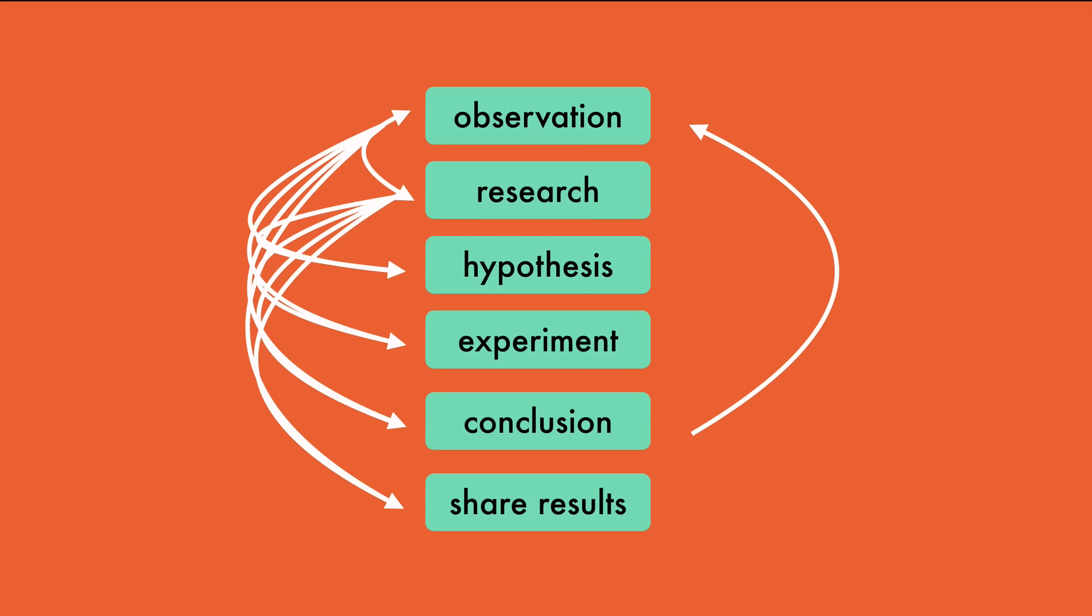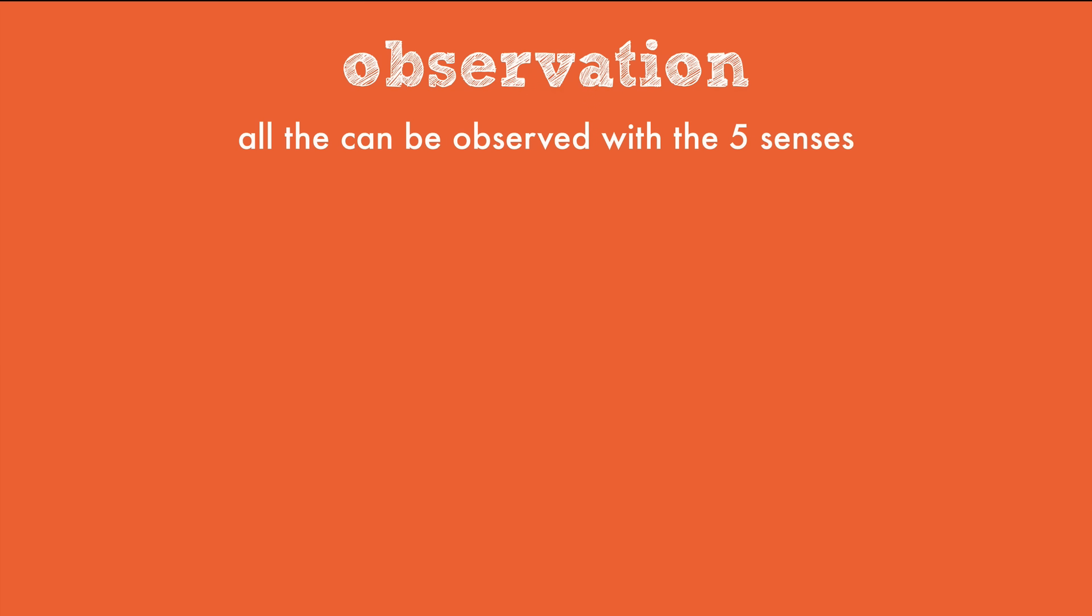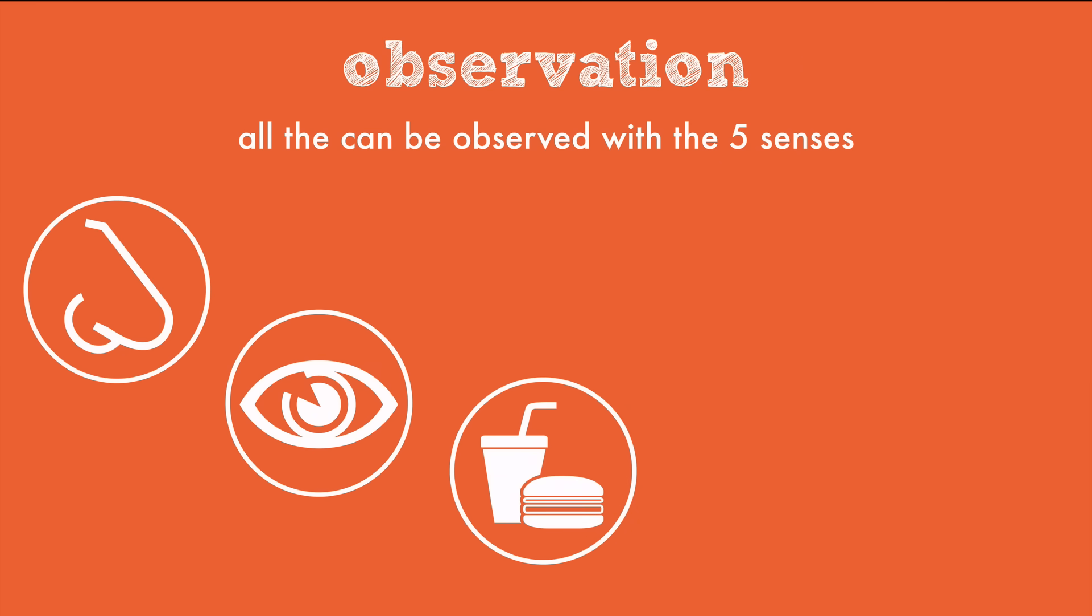Now let's break down each of these steps into their component parts. All that can be observed with the five senses are included in observations. You use your sense of smell, sight, taste, touch, and hearing to make your observations in science.